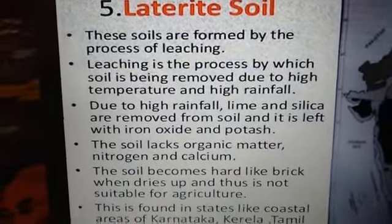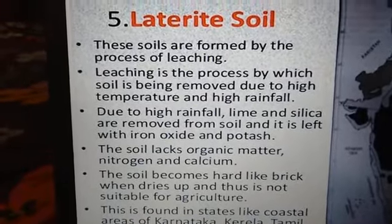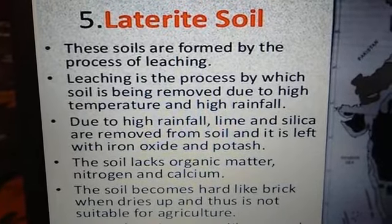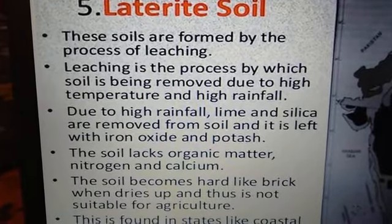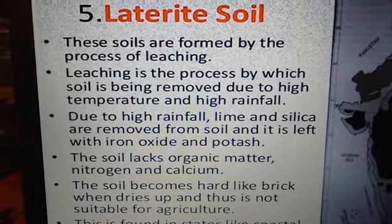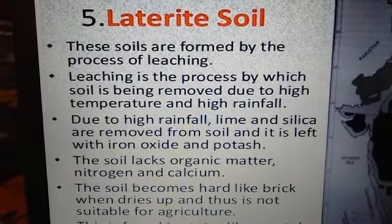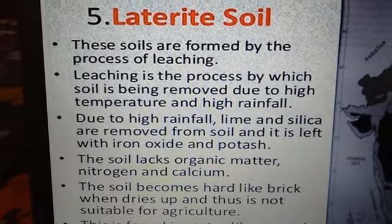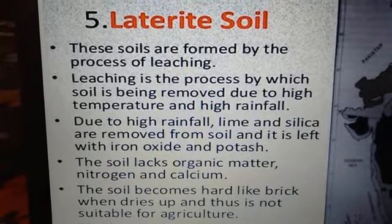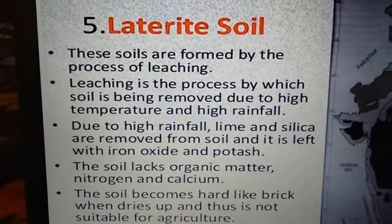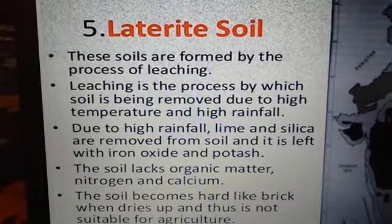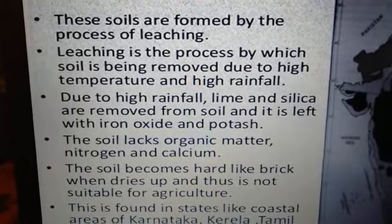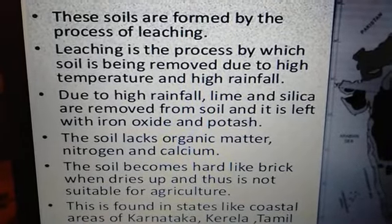Now we will discuss laterite soil. These soils are formed by the process of leaching — a process by which, when there is heavy rainfall and high temperature, the chemical nutrients are washed away. Due to high rainfall, lime and silica are removed from the soil and it is left with iron oxide and potassium.